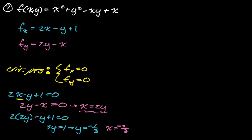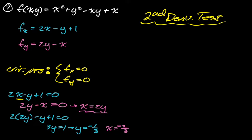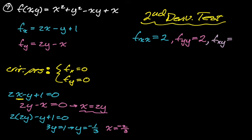Now we need to apply the second partial derivatives test, which requires partial xx, partial yy, and partial xy. Partial xy and partial yx are equal by Clairaut's theorem. Partial xx is the derivative of partial x with respect to x, giving us 2. Partial yy gives us 2. Partial xy, the derivative of partial x with respect to y, gives negative 1.